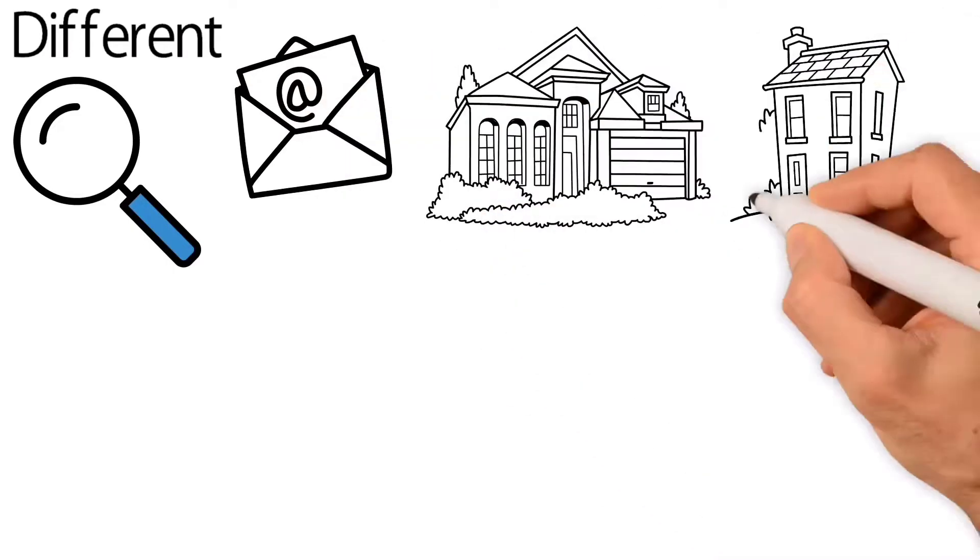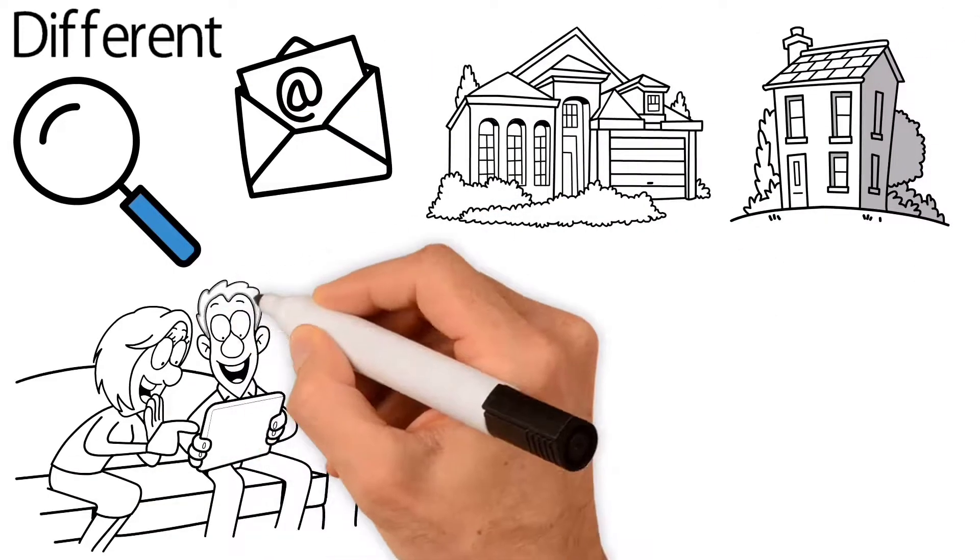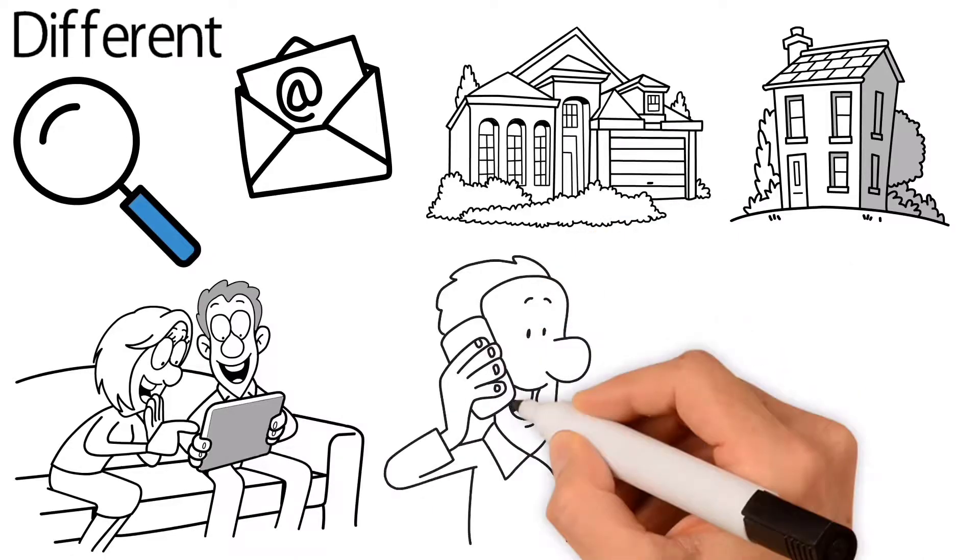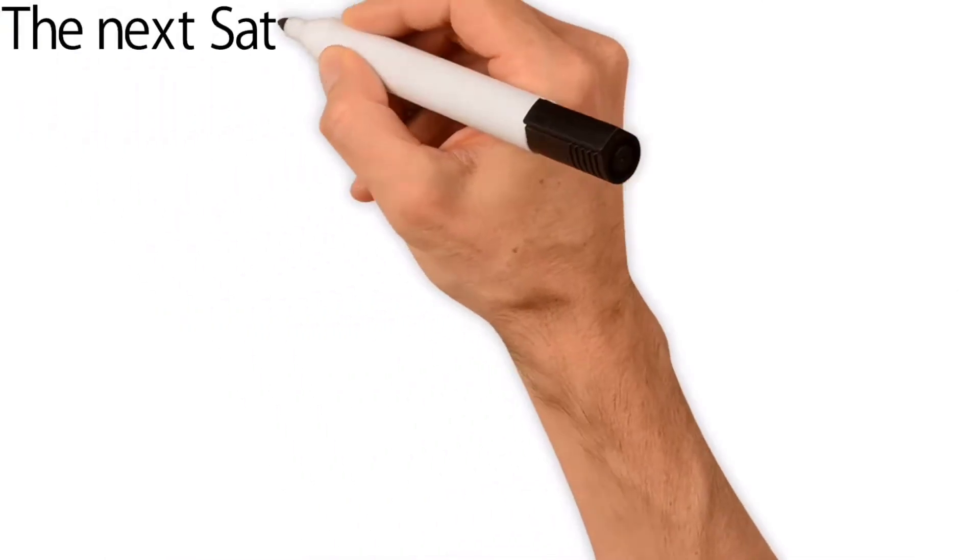Then they started to receive emails from Hermione with different potential homes. Joe and Lisa looked these over carefully and called Hermione up and asked her if they could see a half dozen or so the next Saturday.